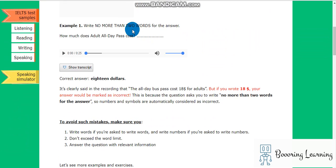Write no more than two words for the answer. How much does an adult all-day pass cost? Thank you for choosing City Tours. The reason so many people choose our tours when visiting this city is because you can design your tour to suit your own interests. Your all-day pass entitles you to board our bus at any stop and stay as long as you like at each place. The all-day bus pass costs eighteen dollars for adults.